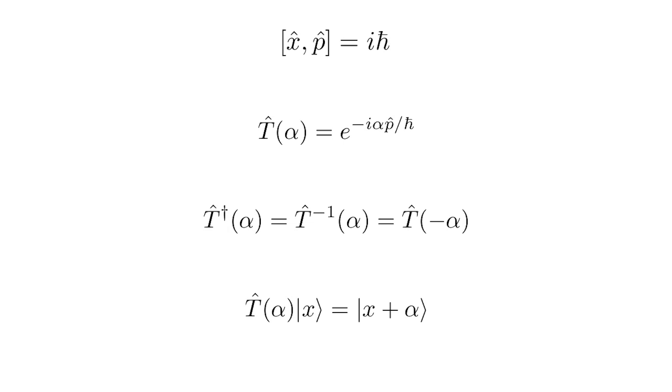To finish, let's summarize. We started with position x and momentum p with commutator iℏ, and defined T(α) = e^(−iαp/ℏ). We found it is unitary with T†(α) = T⁻¹(α) = T(−α), and proved T(α)|x⟩ = |x + α⟩, confirming it translates kets by α. The key consequences include the Fourier transform relationship between real-space and momentum-space wave functions, and the fact that the momentum operator computes the derivative of wave functions. I hope you liked the video — please subscribe for future content!